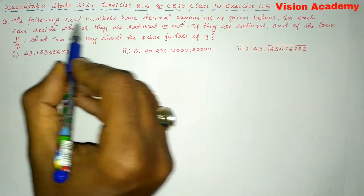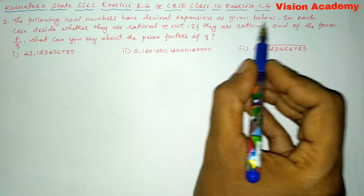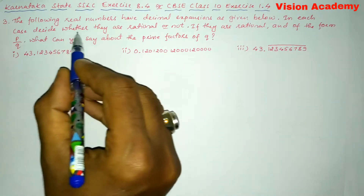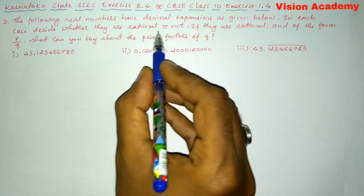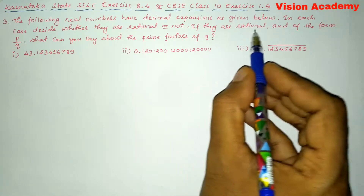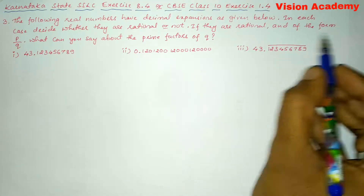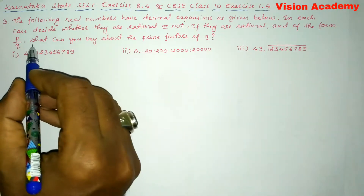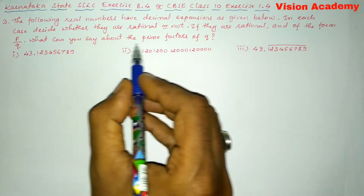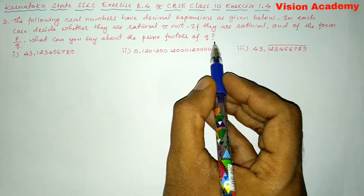The following real numbers have decimal expansions as given below. In each case decide whether they are rational or not. If they are rational and of the form P by Q, what can you say about the prime factors of Q?